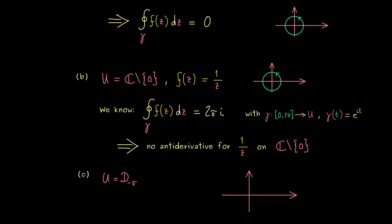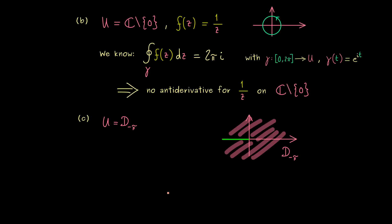In fact for this domain we have defined the principal value of the logarithm function. Now moreover in the same way as we have done it in real analysis we can show that the derivative of the logarithm function is 1 over z.